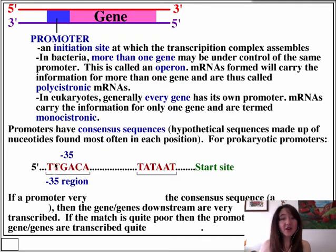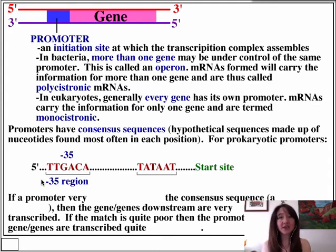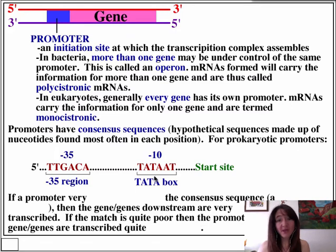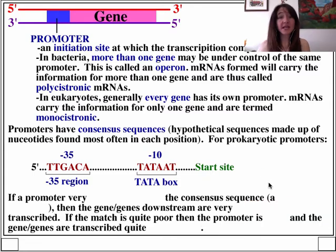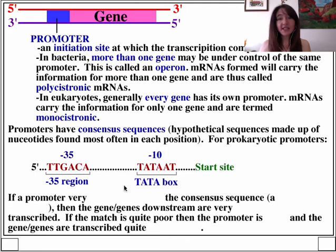The ideal minus 35 consensus sequence is TTGACA. That doesn't mean that promoters always have exactly TTGACA — it just means that they're the strongest, or most frequently transcribed, when they do have that ideal sequence of TTGACA. But the minus 10 region also contributes to this. A little closer to the start site is the minus 10 or the TATA box. The TATA box is by far the most famous of promoters, because not only do bacteria and archaea have a minus 10 TATA box, but we also see a TATA box in eukaryotes — it's in a different place, but it still is a TATA consensus sequence.